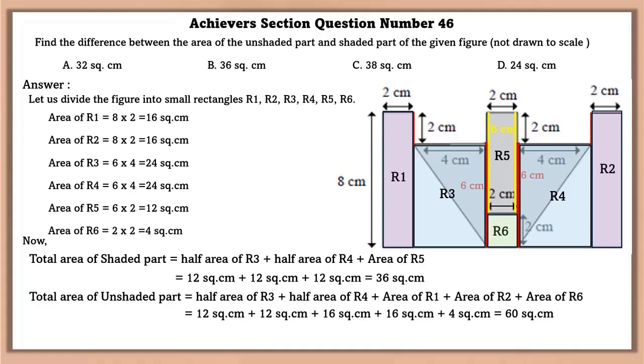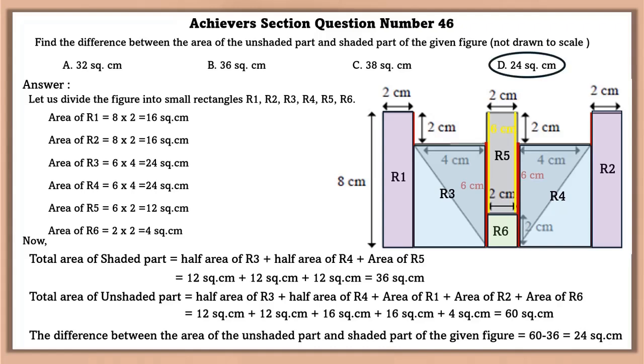Now total area of unshaded part is equal to half area of rectangle 3 plus half area of rectangle 4 plus area of rectangle 1 plus area of rectangle 2 plus area of rectangle 6 that is 60 square centimeter. Now the difference between the unshaded and shaded part is equal to 24 square centimeters.